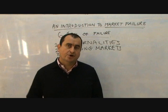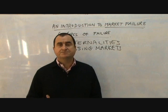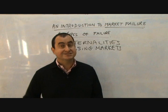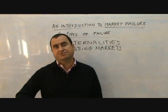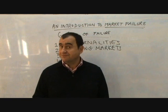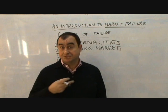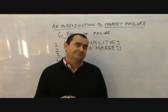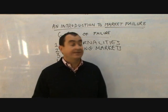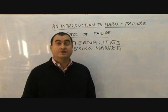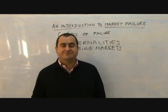Public goods possess non-rivalry and non-excludability. Non-rivalry means that when one person consumes the good, it doesn't reduce the quantity available for others. Non-excludability means that once the good is provided for one, anyone can use it and can't be stopped from using it. This creates the free rider problem — everyone would want to use the product but would wait until someone else paid for it. Consequently, no one buys the product and the market would be missing from the economy. Government has to correct this by stepping in, providing it, and paying for it out of taxation.